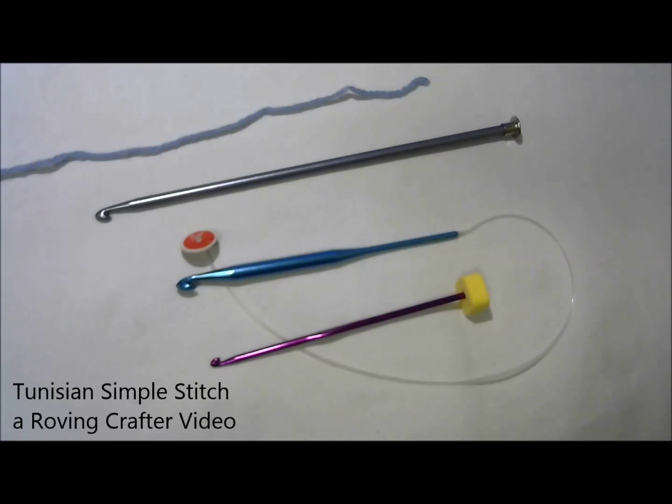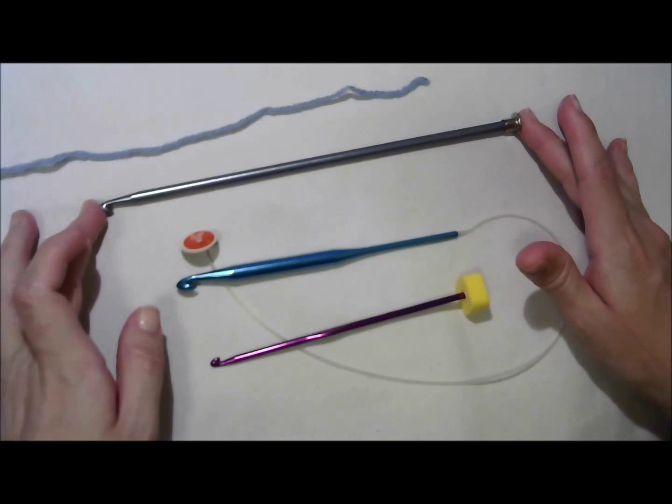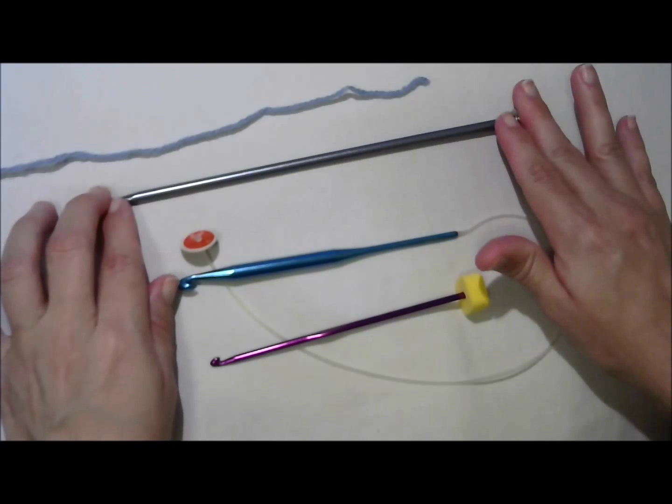So you're ready for Tunisian crochet. Outstanding. I've got my three possible hooks. The traditional Tunisian hook. This is a size I, by the way.